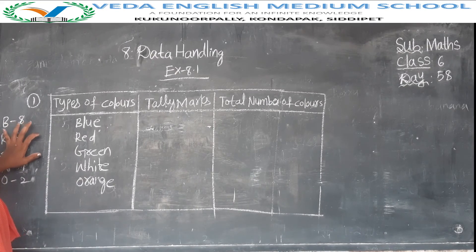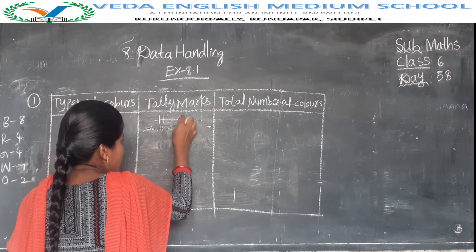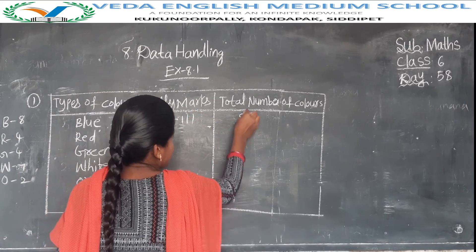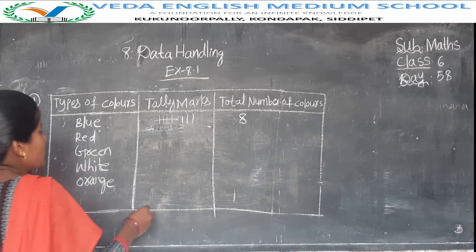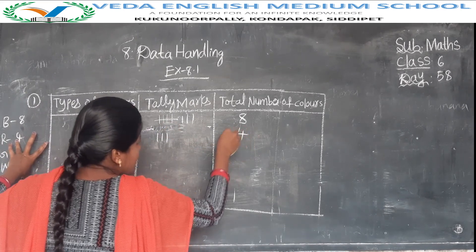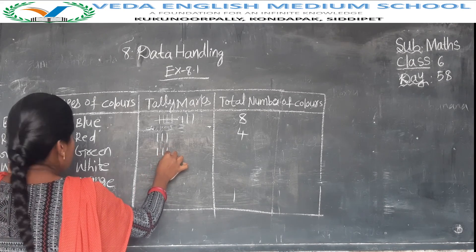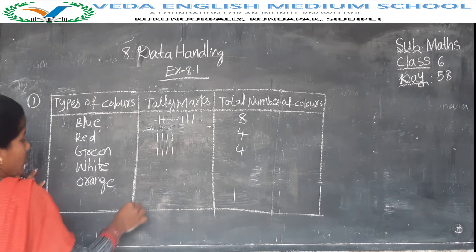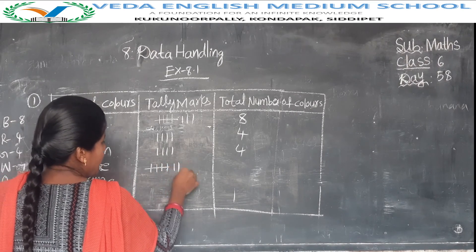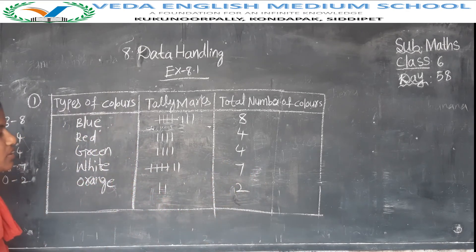Blue: 8 students like blue. Tally marks for 8: four lines cut for five, plus three more. Red: 4 students — tally marks: 1, 2, 3, 4. Green: 4 students — tally marks: 1, 2, 3, 4. White: 7 students — tally marks showing seven. Orange: 2 students — tally marks: 1, 2.